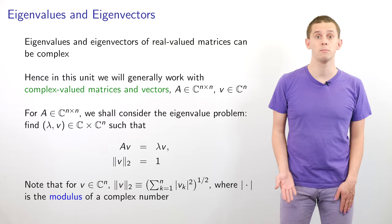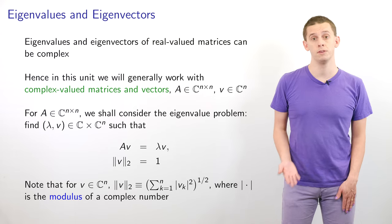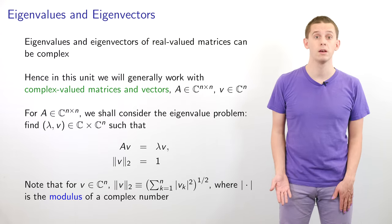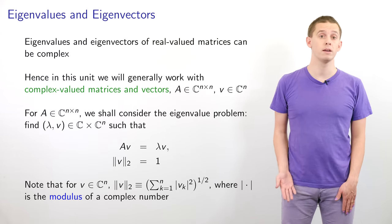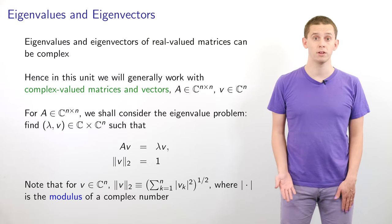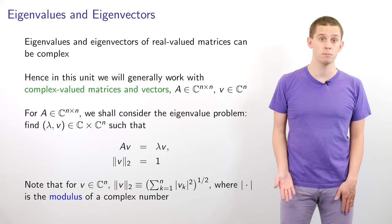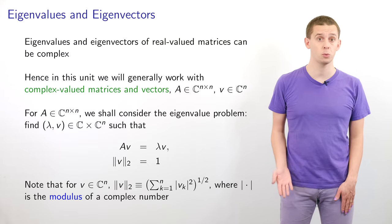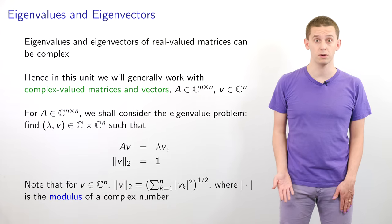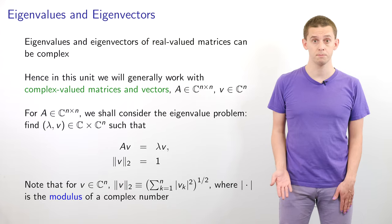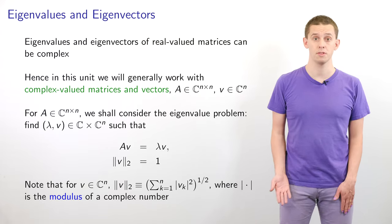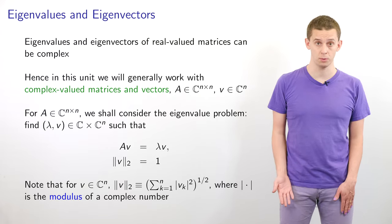Because v is a complex-valued vector, we define the Euclidean norm by taking the sum of squares of the moduli of the components of v and then taking everything to the square root.